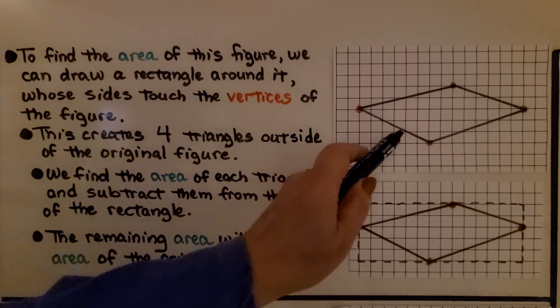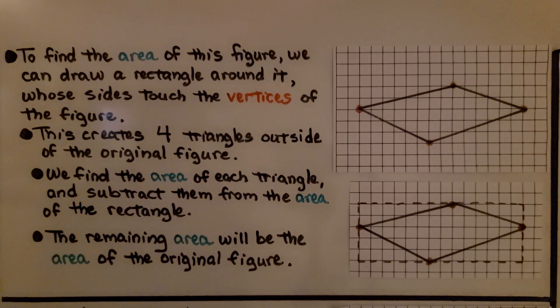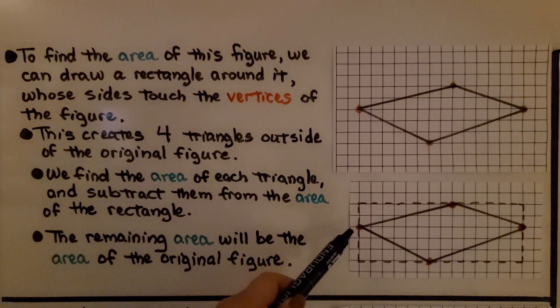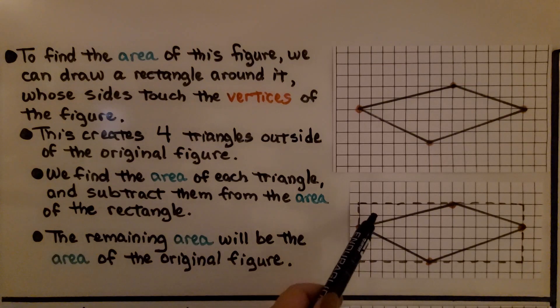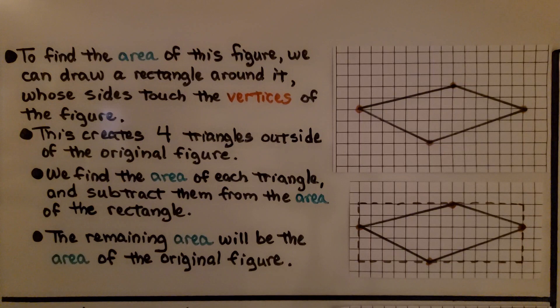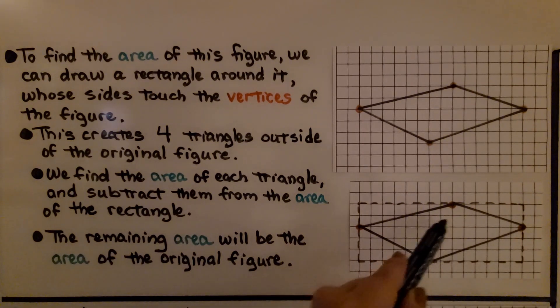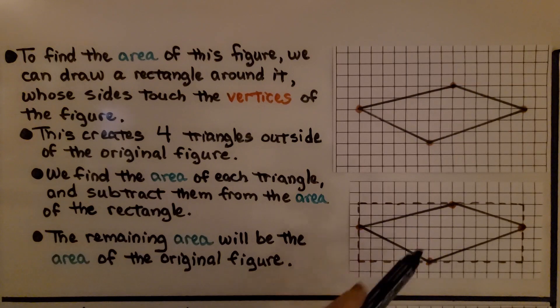Now take a look at this figure. To find the area of this figure, we can draw a rectangle around it whose sides touch the vertices of the figure. This creates four triangles outside of the original figure. We find the area of each triangle and subtract them from the area of the rectangle. The remaining area, the part that's inside here, will be the area of the original figure.